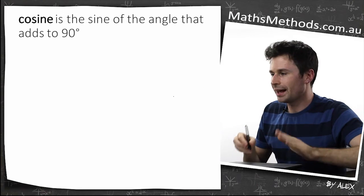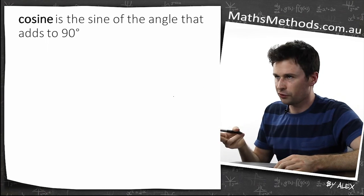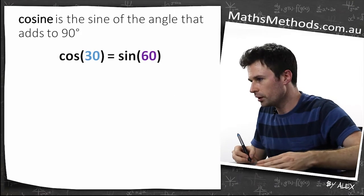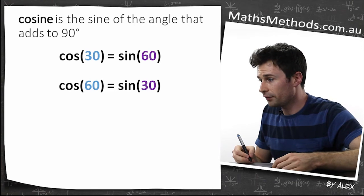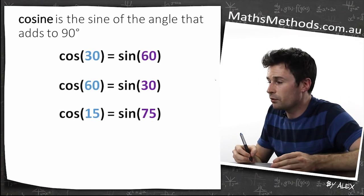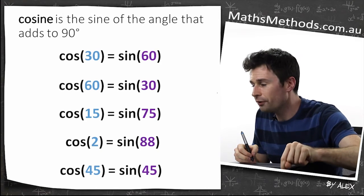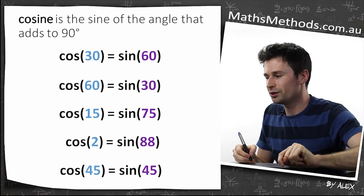Cosine is the sine of the angle that adds up to 90, which is the same thing as what I said before with different words. So cos of 30 is the same as sine of 60. Cos of 60 is the same as sine of 30. Cos of 15 is the same as sine of 75. Cos of 2 is the same as sine of 88. Cos of 45 is the same as sine of 45.